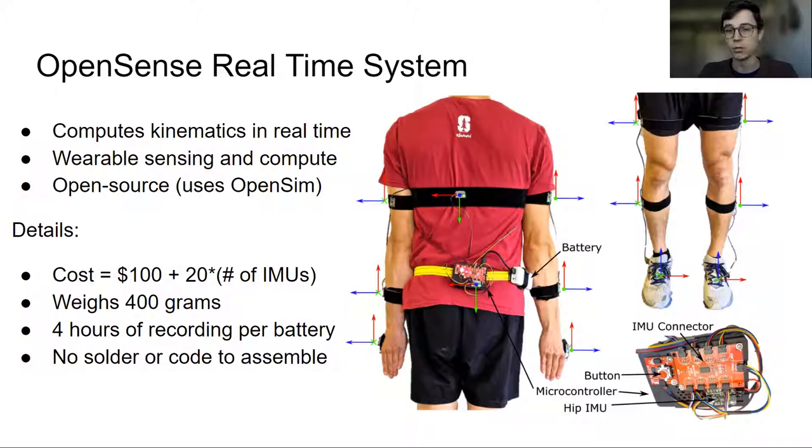There's no soldering or code to assemble this system, so it's just plug and play. It's very simple and it's customizable. You can have up to 14 IMUs at the locations shown in this figure, and all you have to do to customize this is just edit a text file saying where you're going to put IMUs on the body.